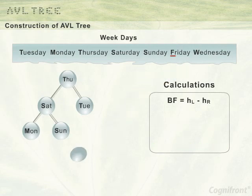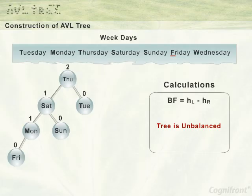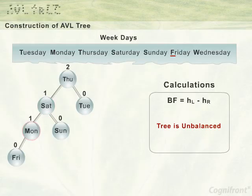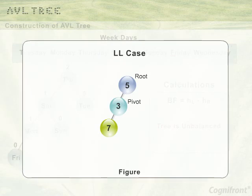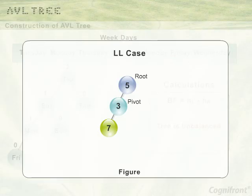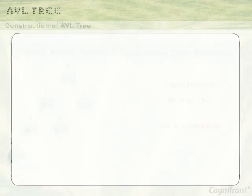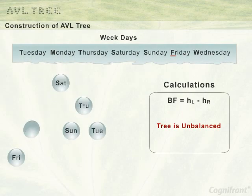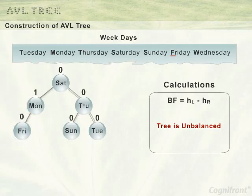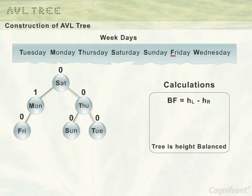Next is Friday, which is inserted to the left of Monday. The balance factor of Thursday becomes 2, which unbalances the tree. As Thursday is the only nearest ancestor of Friday, rotation is performed around Thursday. Friday is inserted to the left subtree of the left subtree of Thursday, so the rotation will be LL. In the figure, 5 is the root node and 3 is the pivot; in LL rotation, the pivot becomes the new root node. So here, Saturday becomes the new root. Monday together with its left subtree becomes the left subtree of Saturday, and Thursday with its right subtree becomes the right subtree of Saturday.